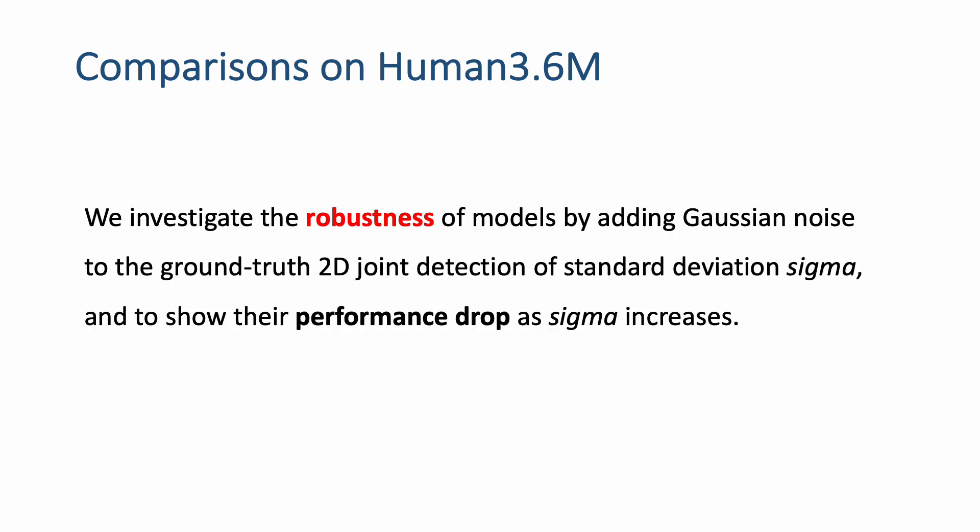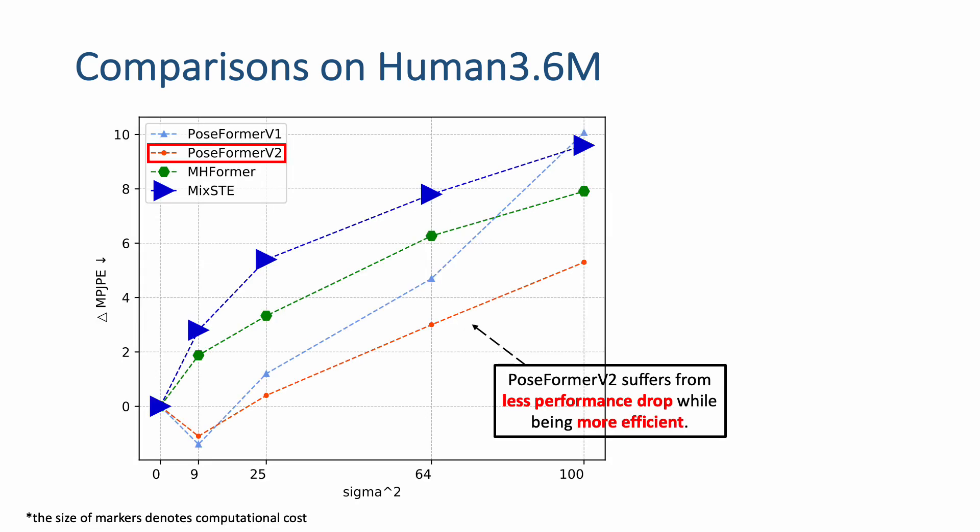To show the robustness of our model, we add Gaussian noise to the ground truth 2D joint detection with standard deviation sigma and show their performance drop as sigma increases. We show that our PoseFormer V2 suffers from less performance drop while being more efficient. The size of the markers denotes the computational costs of different models.